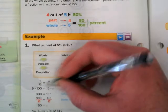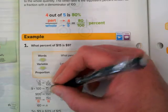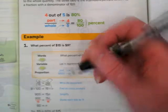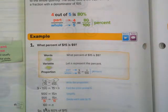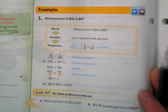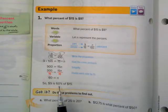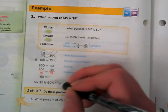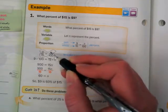And then we would cross multiply. Notice what the book is showing us: 9 times 100 would be equal to 15 times n. This is an example—they've done all the work for us. And then you would take and divide 900 by 15 and you would get 60. So look at what the answer says: So $9 is 60% of $15. Okay, and if you look in this ratio when we finish, 9 and 60 would be across from each other.